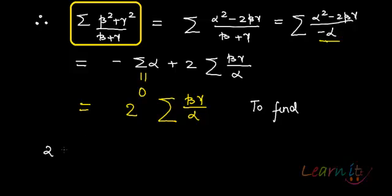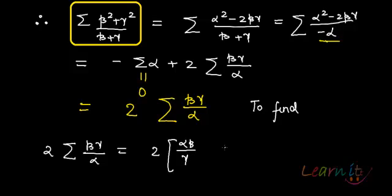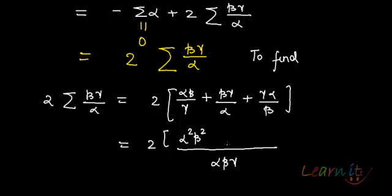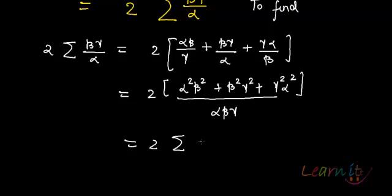Let us consider twice of summation (βγ/α). If I open it up, it covers all combinations of the three roots: αβ/γ + βγ/α + γα/β. Taking the LCM, I get αβγ in the denominator and twice of (α²β² + β²γ² + γ²α²) in the numerator, which is summation α²β² divided by αβγ.